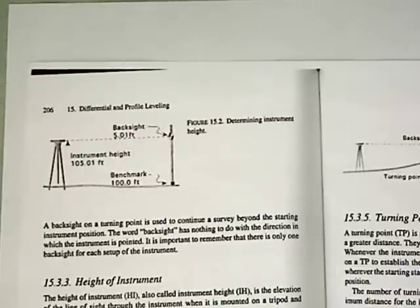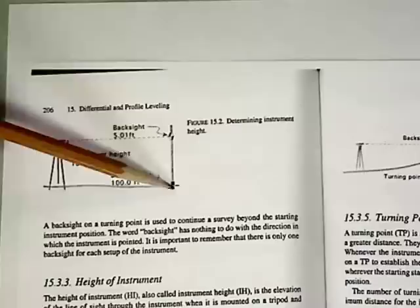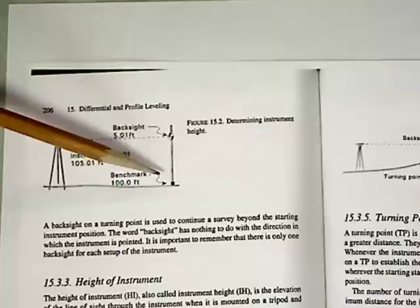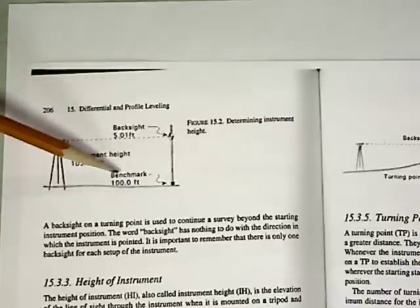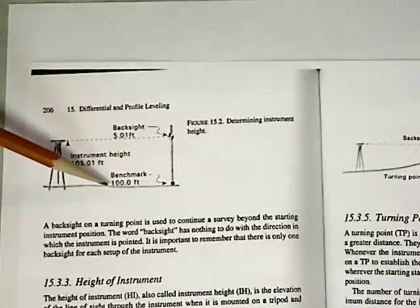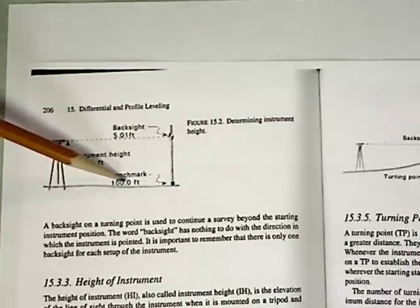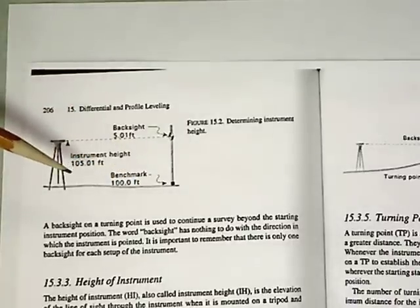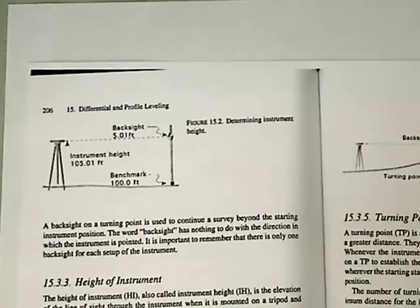The very first sight we're going to take is called a back sight. A back sight is a rod reading on a known elevation — here's our benchmark. This benchmark can either be established or actual, but in this particular case it's probably an assumed elevation of 100.0 feet above sea level.